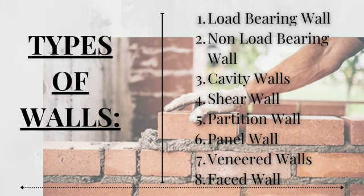Here are some types of walls: first, load bearing wall; second, non-load bearing wall; cavity wall; shear wall; partition wall; panel wall; veneered wall; and faced wall. Here are some tools used for construction: bolster, boning rods, brick hammer, bump cutter, chisel, circular saw, concrete mixer, crowbar, drill machine, jack plane, ladder, and measuring box, etc.